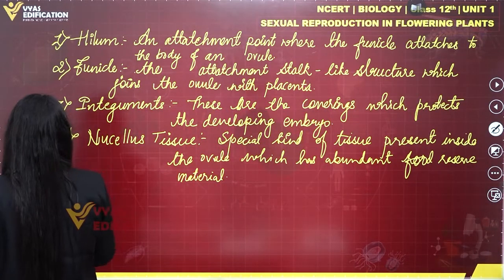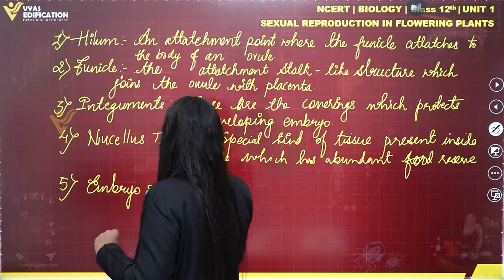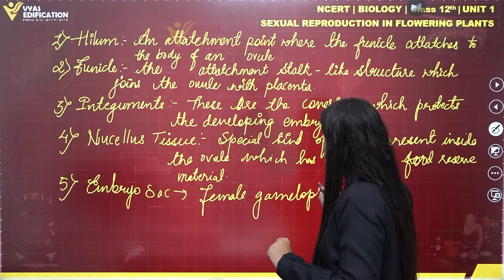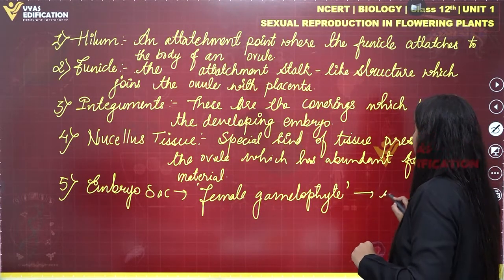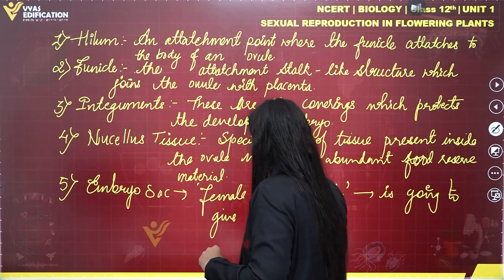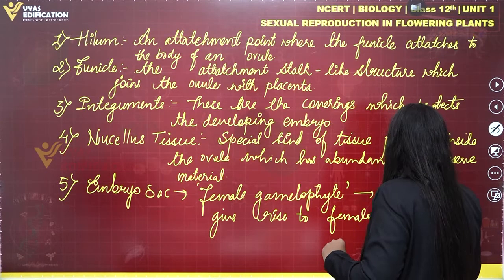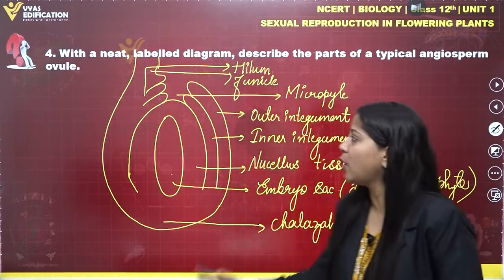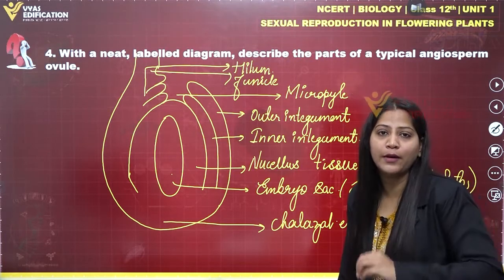Last but not least, the fifth part is the embryo sac, which is also known as the female gametophyte. This female gametophyte gives rise to the female gamete inside it. With this, we have completed the solution of question number 4 — with the neat and labeled diagram of an ovule and a description of all its parts.